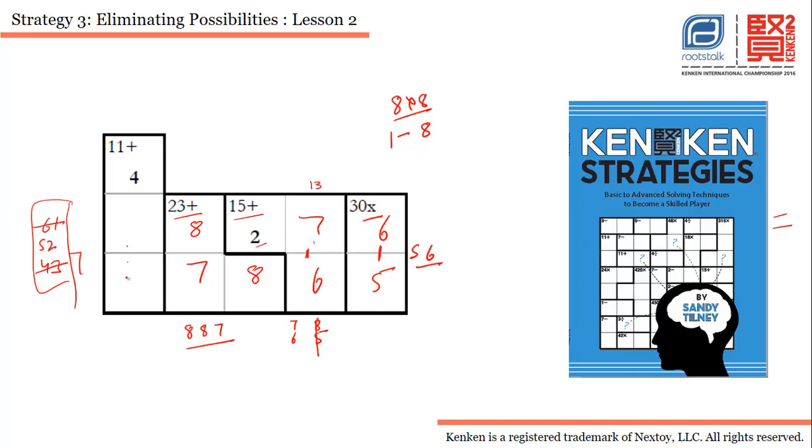Now we are left with 5 and 2. 5 is already there in this row, so we will be putting 5 here and 2 here. So this is how we can solve this particular problem. I hope you enjoyed this.